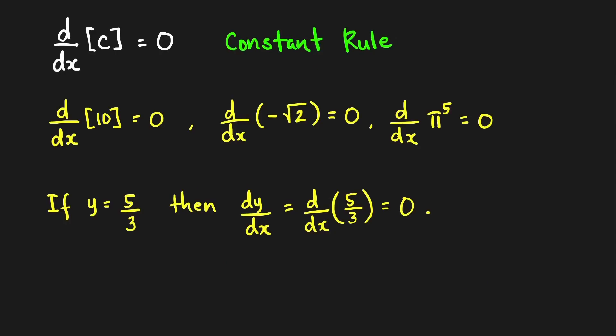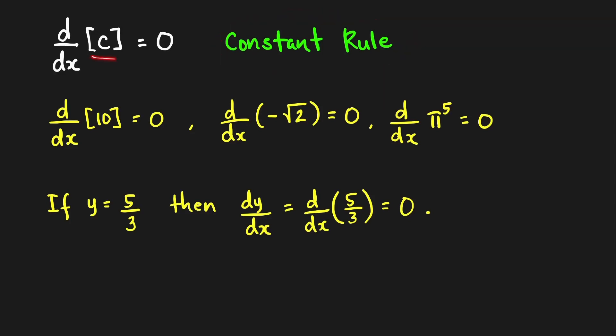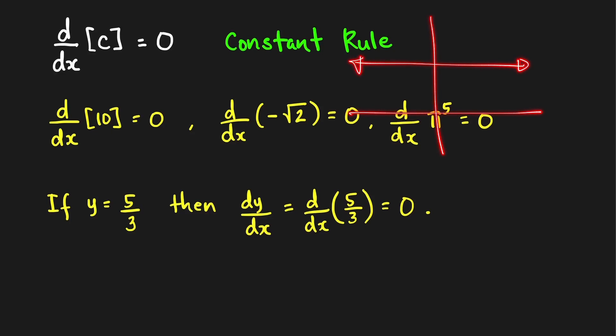First rule: we have the constant rule. It tells us that the derivative of a constant function with respect to x is equal to 0. This is clear because if you have a constant function, the y value is not changing — the function value is not changing at any x. It is constant. The tangent line at any point is just the line itself, and the slope of this line is equal to 0.